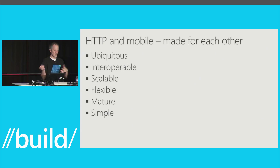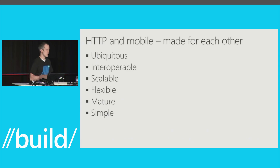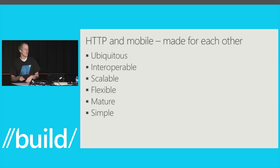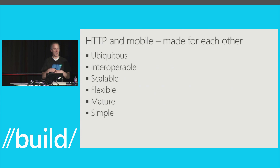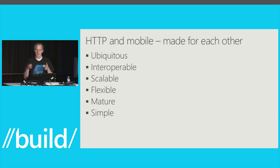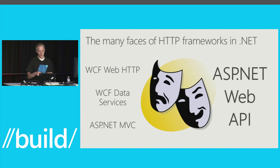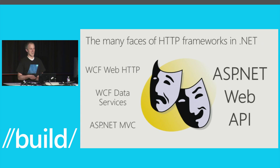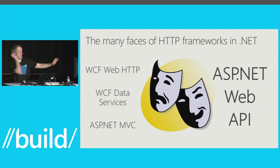It's interoperable — different platforms can work on either side of the wire. It scales really well; we know that because it's the protocol used by the Web. It's very flexible — you can put anything you want in that HTTP request or response message: any media type, binary data, JSON, XML, form URL-encoded data, PDFs. You have all that flexibility to create and use formats specific to your application's needs. It's very simple, very mature, and a great bet for building mobile applications.